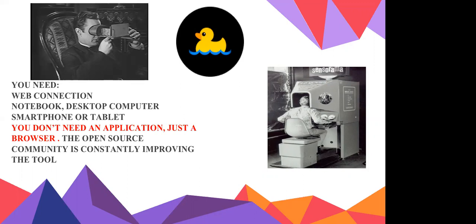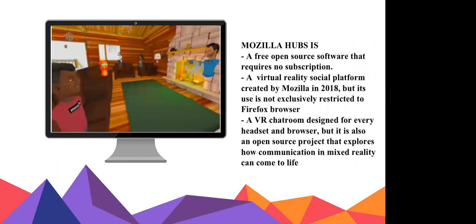Above all, it's an open source community. This means people can improve the tool continuously, and the tool is continuously changing thanks to the community that contributes to its development. Mozilla Hubs is a free open source software — it requires no subscription. It's a virtual reality social platform created in 2018. Its use is not restricted to Firefox; you can also use Google Chrome. We can define it as a chat room designed for every headset and browser, and an open source project exploring how communication in mixed reality can come to life.